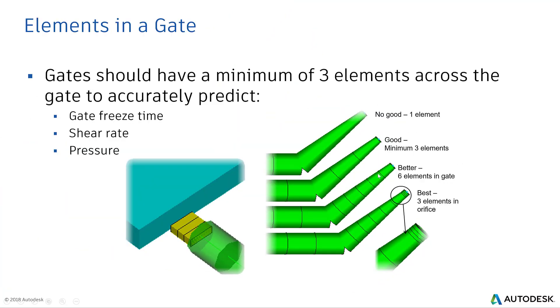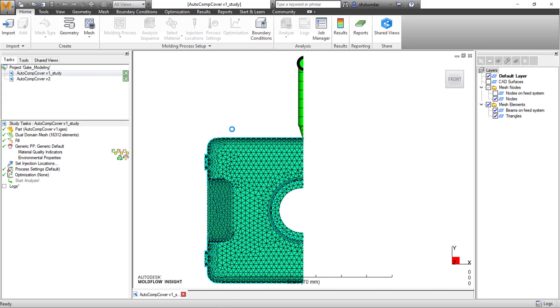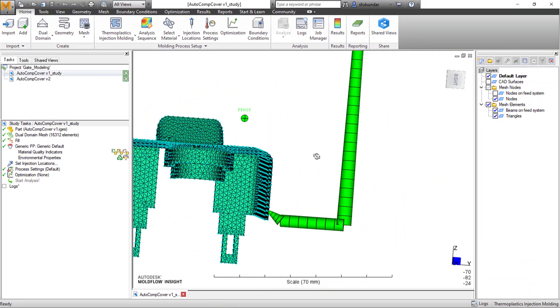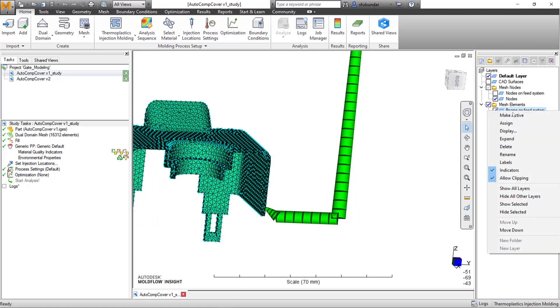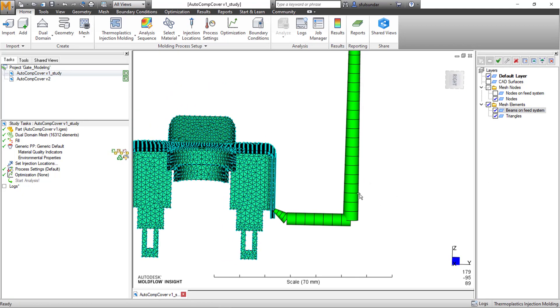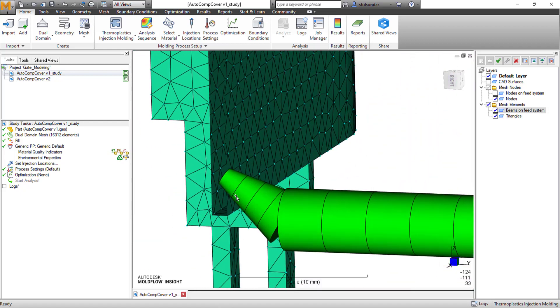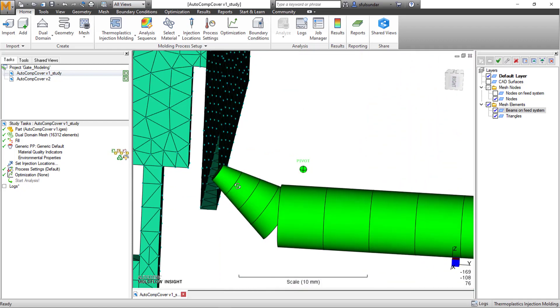How to go about that we'll see in the demonstration. Now you can see that normally we end up creating the feed system, then the sprue, then runner, and then gate, and then it lands on the product wall.